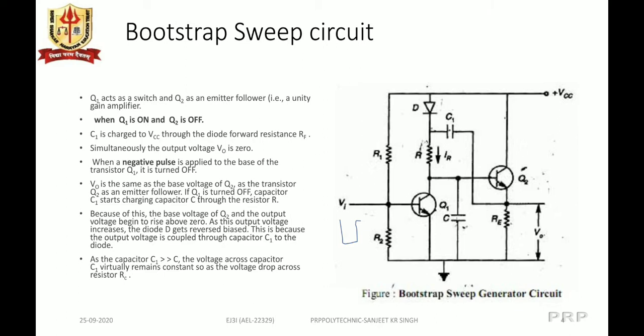When a negative pulse is now applied to the base of transistor Q1, it turns Q1 OFF. Since transistor Q2 is configured as an emitter follower, the output voltage V0 is the same as the base voltage of transistor Q2.